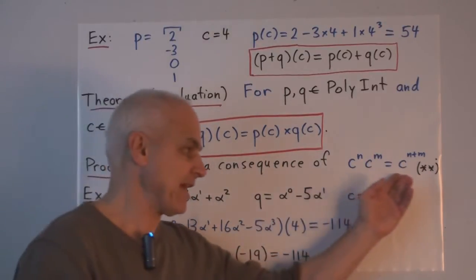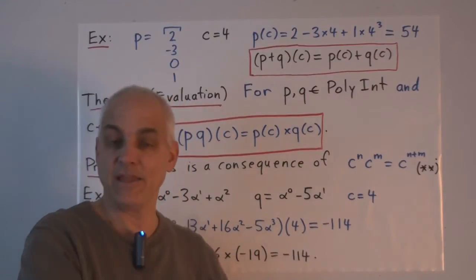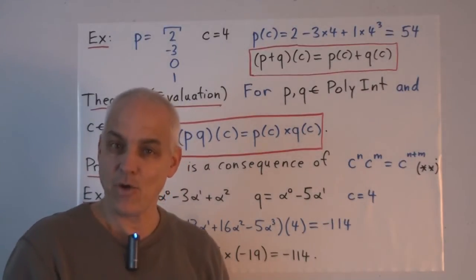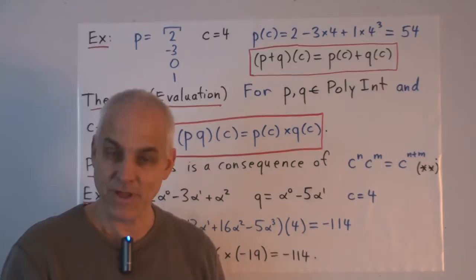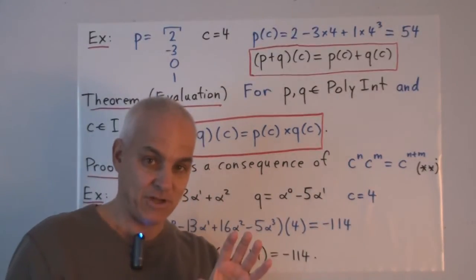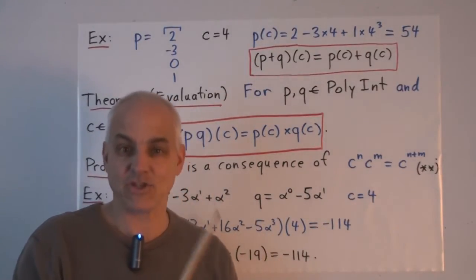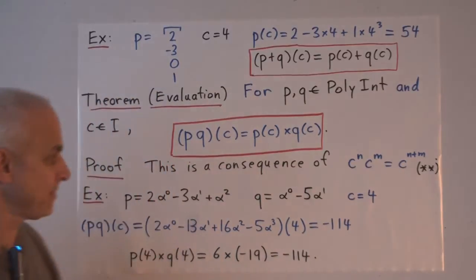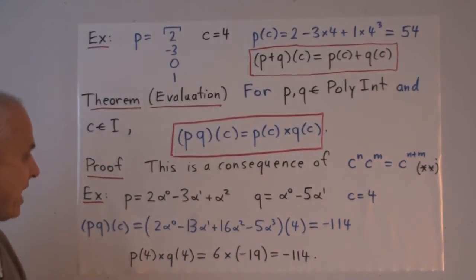And that's exactly the same property that's satisfied in the poly number context with the powers of alpha. So if we replace the alphas with the C's, then the multiplicative structure is maintained.